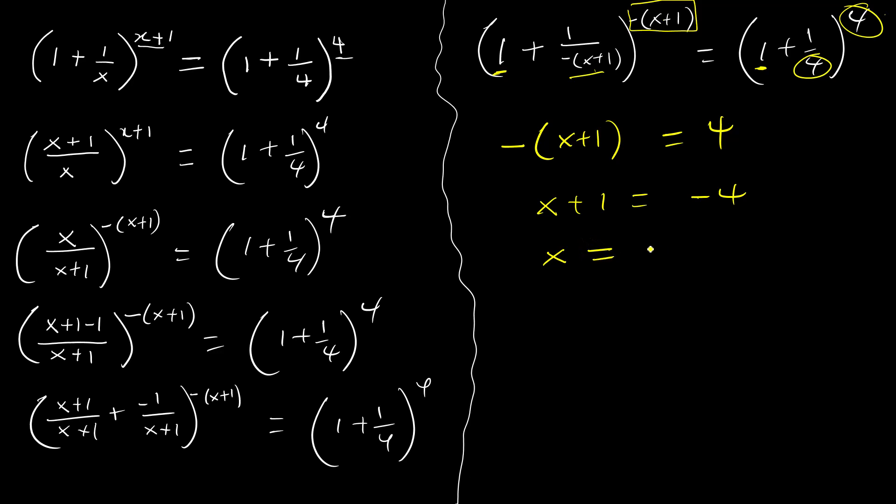Which will give us minus four minus one. So my x will be minus five. So x is minus five.